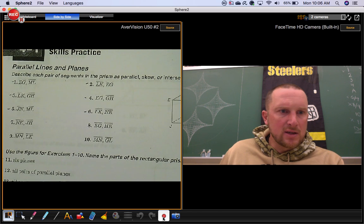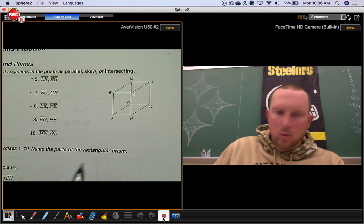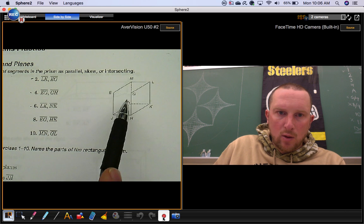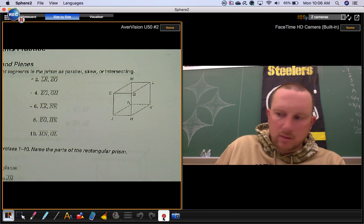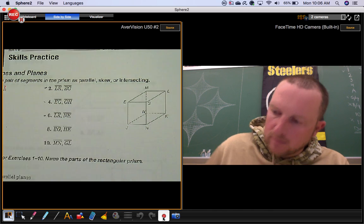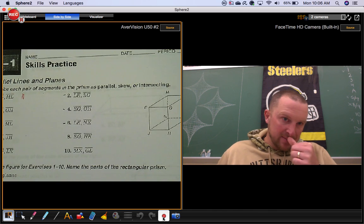So we're going to look at segment EG and segment ML. They're both on the ceiling. They don't touch each other. Those are parallel. I'm going to use that little symbol there. That means parallel.